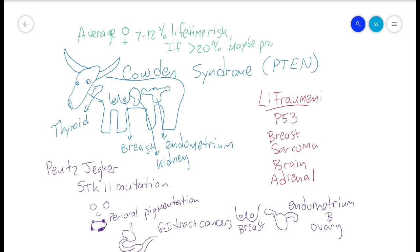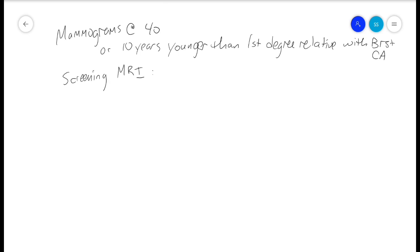Let's talk about screening and imaging. I still think screening mammograms starting at 40 are a good idea. You can start screening mammograms 10 years younger than the age of a first-degree relative that has breast cancer. Screening MRI is appropriate starting in the mid-20s for high-risk family history or a known genetic mutation.